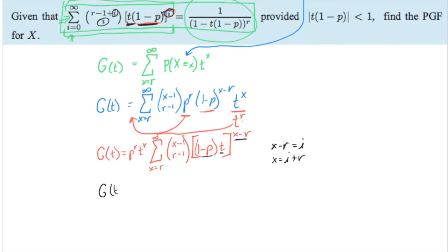Now that's going to result in a couple of things. That means that x is going to equal i plus r. That's going to be important here. Let's go ahead and see what happens when we start to put that in. So we'll go G(t) equals the pt to the r is going to stay the same. The summation here used to go from x to r, but x is equal to i plus r. Now, I also know that x minus r is i. So here, if I subtract r from each side, I'm going to have x minus r equals 0, or in other words, i equals 0. And so I'm going to have the summation from i equals 0 up to infinity, because it still goes on infinitely.